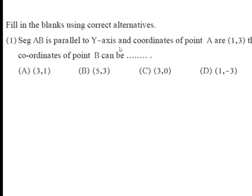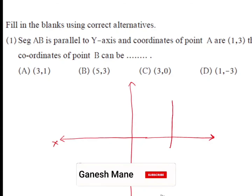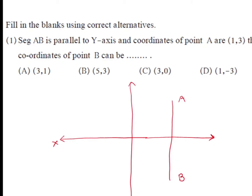Segment AB is parallel to the y-axis and the coordinates of point A are given. Then the coordinates of point B can be — four options are given. To solve this question we must use the Cartesian coordinate system, with the horizontal x-axis and the vertical y-axis. It is given that segment AB is parallel to the y-axis, so let us draw segment AB parallel to the y-axis. If this is segment AB, then the coordinates of point A are (1, 3).